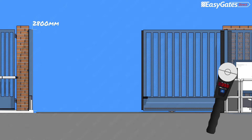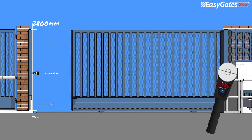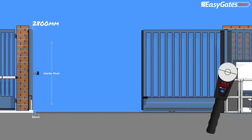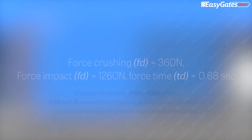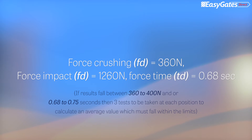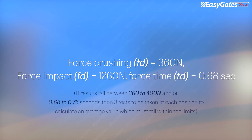Once these tests are complete, the position that produced the highest values, i.e. the closest to the limits described, is to be tested again at a 50mm separation distance from the closing position. Assuming all the tests carried out fall within the 90% limit values described, then force testing on the closing crush hazard can now be considered complete. If an opening crush hazard exists at the other end of the gate, these tests are to be repeated there also.